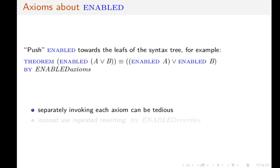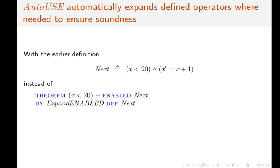But step-by-step invocation of ENABLED axioms to apply all these axioms in sequence can be tedious. Which is why there now exists a proof directive called ENABLEDrewrites. And this invokes an approach that repeatedly applies these axioms until a fixed point is reached.